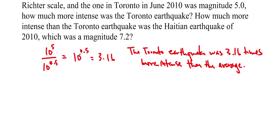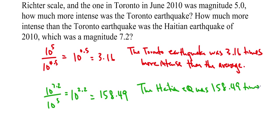And to do the Haitian one, we're going to do the exact same thing. So 10 to the 7.2 over 10 to the 5, that gives us 10 to the 2.2, which is approximately 158.49 times. And that's why it was so much more catastrophic. The Haitian earthquake was 158.49 times more intense than Toronto's.